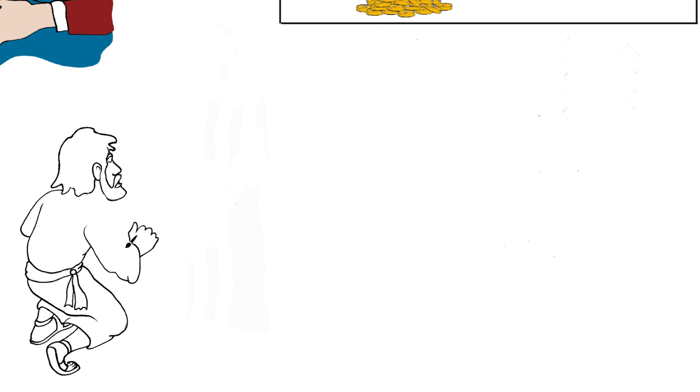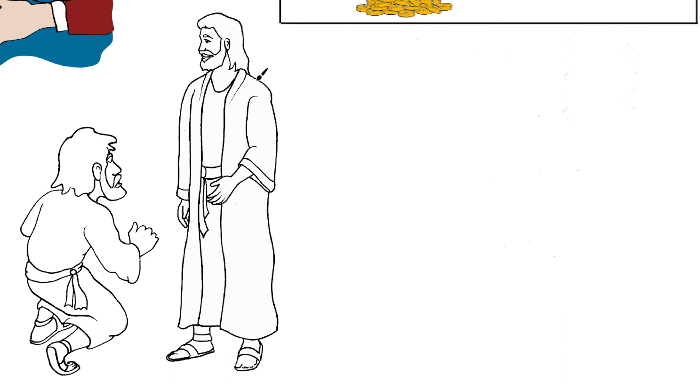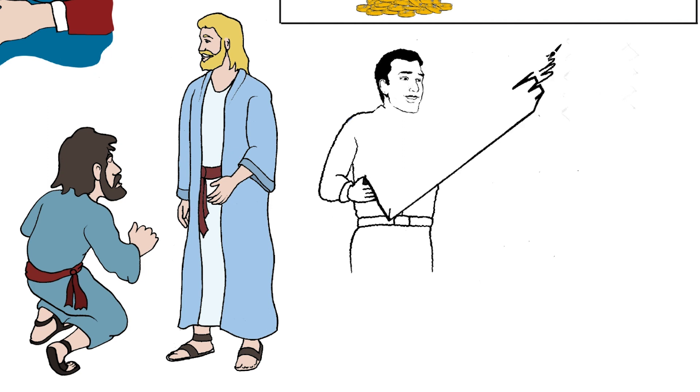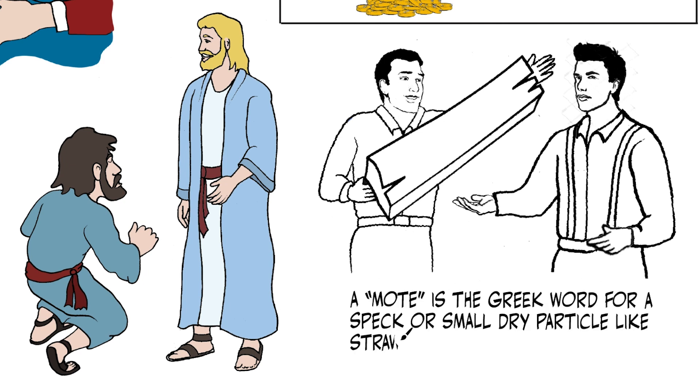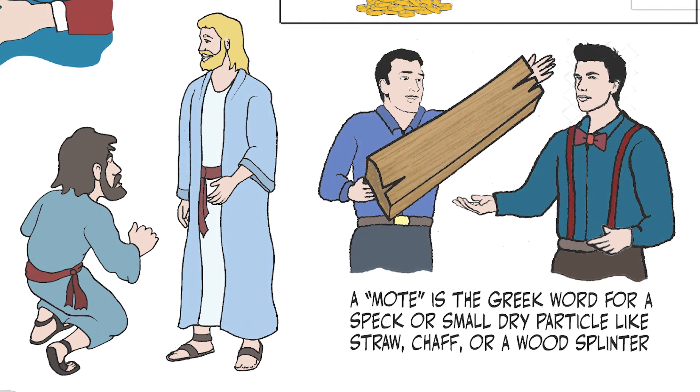He said we should not judge our brother, and only behold or see in his eye the mote, which is a Greek word meaning speck or a small dry particle like straw, chaff, or a wood splinter that might enter the eye. We must also consider in our own eye the wooden beam that was used to construct houses, and we are hypocrites if we don't first cast it out of our own eyes, so we can then see clearly to cast the mote out of our brother's eye.